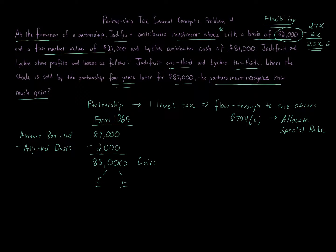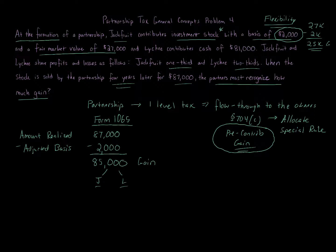Normally, if the partnership had purchased the stock for twenty-seven thousand and sold it for eighty-seven thousand, we would take the sixty-thousand dollar difference and allocate it two-thirds to Lychee and one-third to Jackfruit. But when you have a pre-contribution gain under Section 704(c), one partner contributed property with a built-in gain — basis less than fair market value. The anti-abuse concern is shifting gain to partners in lower tax brackets.